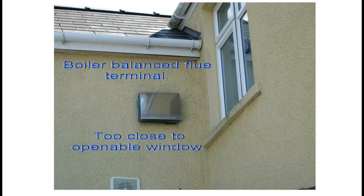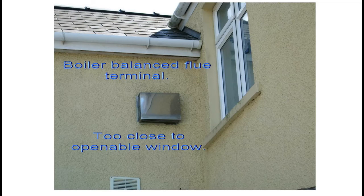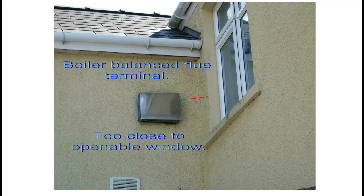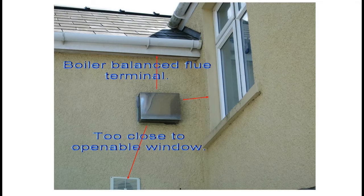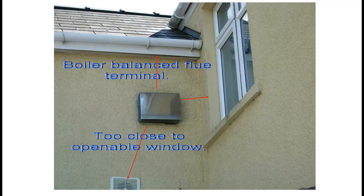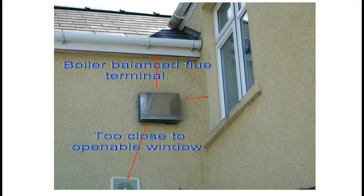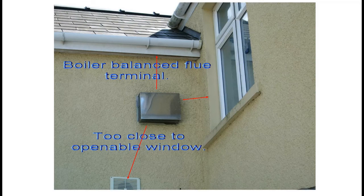And where it's positioned is quite complex from a location point of view because you've got to worry about A, its distance from the window, B, its distance from that ventilation hole, and C, its distance from the soffit and plastic gutter. All of these things have to be taken into consideration. If you look at your chart, you'll be able to see how close a balanced flue terminal is allowed to be to a window.